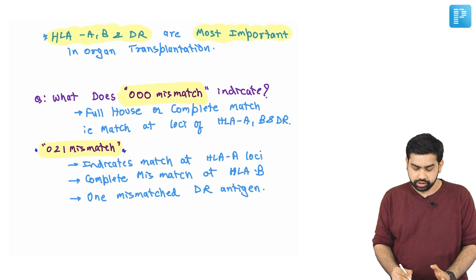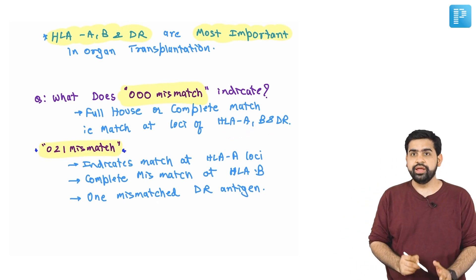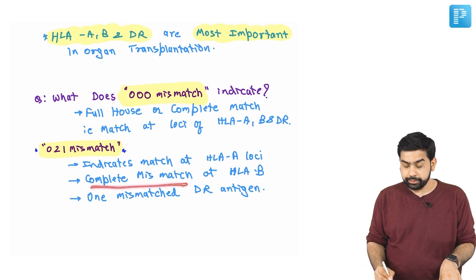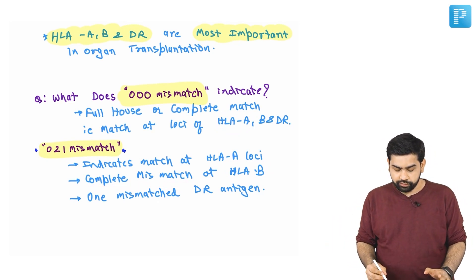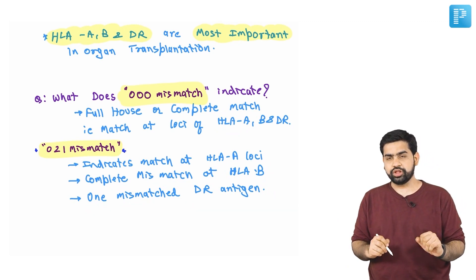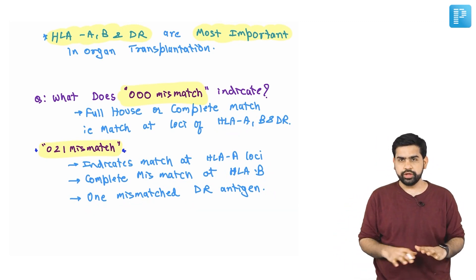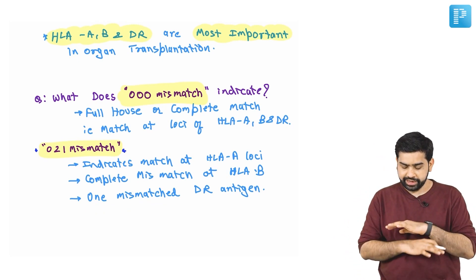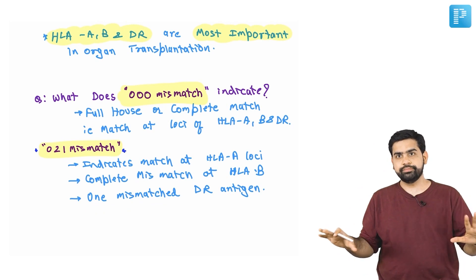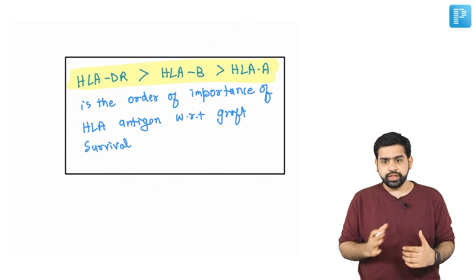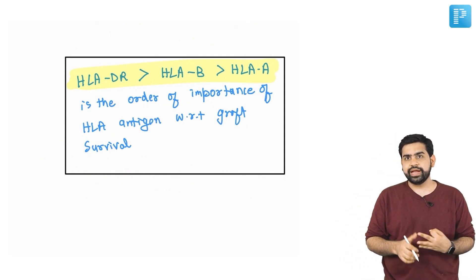If the report shows 0-2-1 mismatch, it means: at HLA-A there is a complete match, at HLA-B both loci are not matching (complete mismatch), and at HLA-DR one locus is not matching. So 0-0-0 mismatch means all loci of HLA-A, B, and DR are matching with each other.